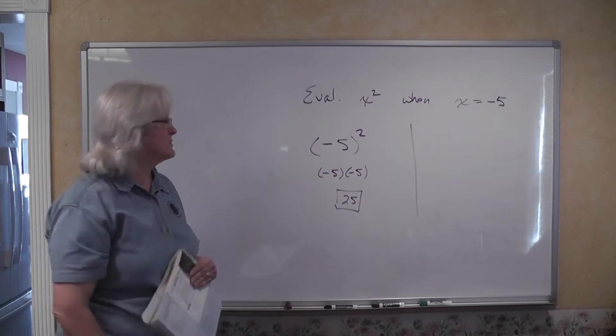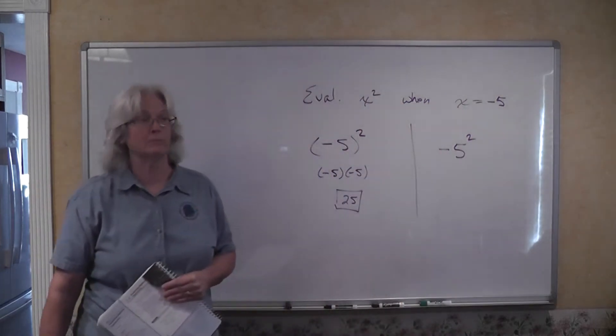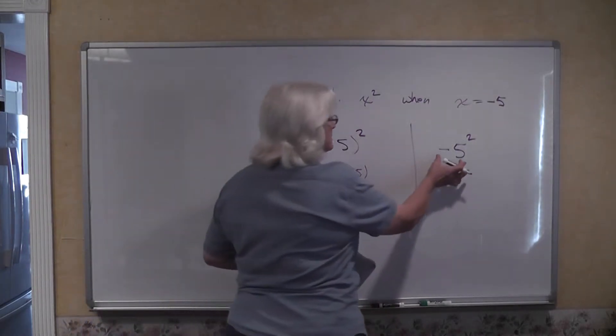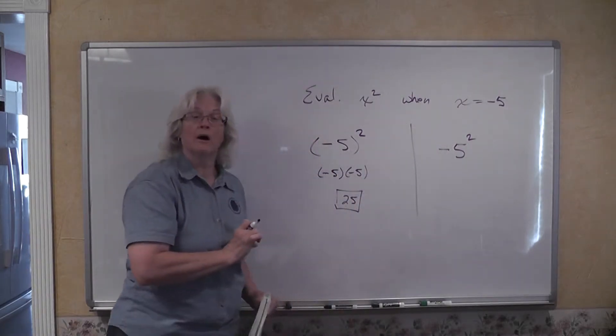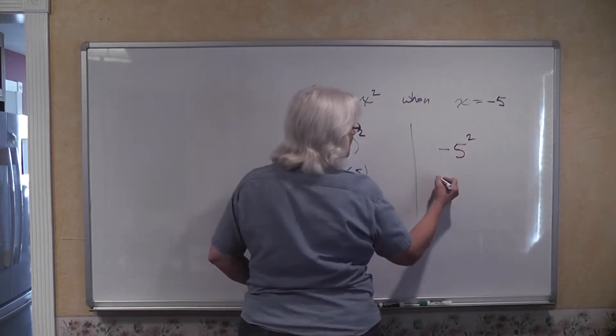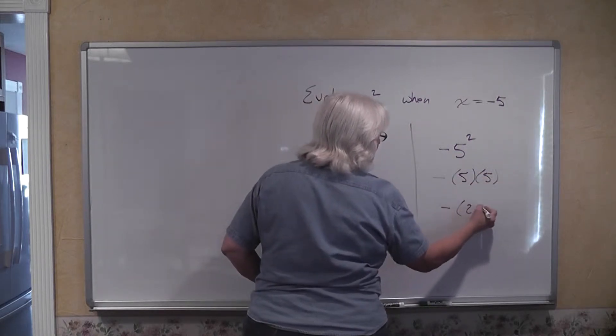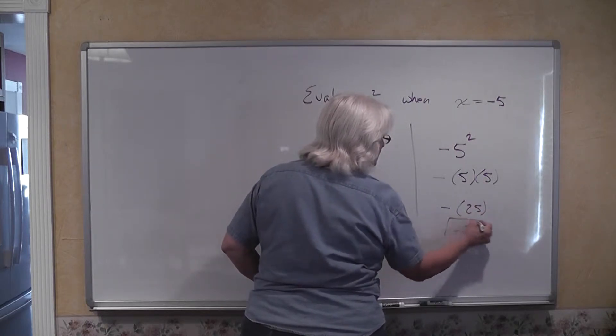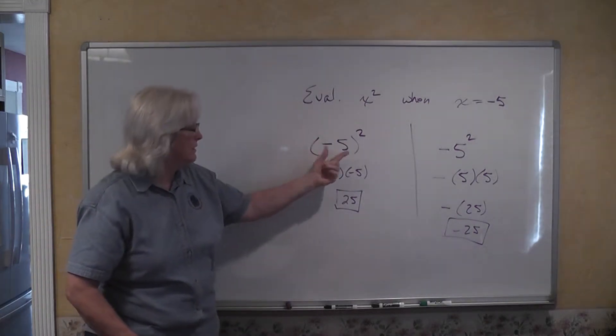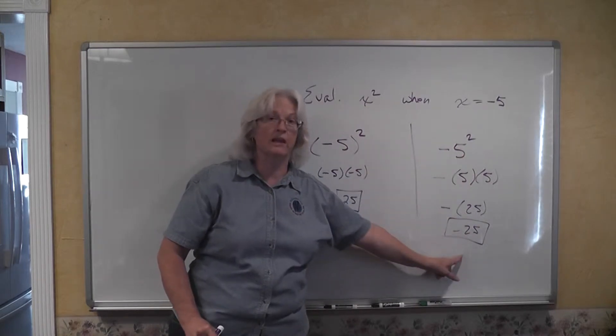Now, however, let's say that we have someone that says I really don't need to put that in parentheses. That's just a waste of time. Well we now have a totally different problem. You think that you have substituted in negative 5 for that x, but you haven't. Because what this now says is that we're using just a 5 as a factor twice. So we're taking the opposite of 5 used as a factor two times, which is a negative 25.